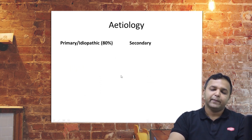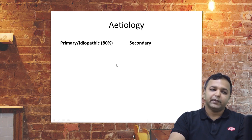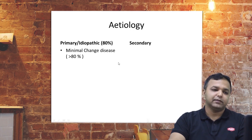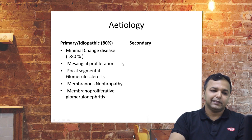Moving on to etiology: childhood nephrotic syndrome is quite different from adult nephrotic syndrome. In children, we generally find primary or idiopathic nephrotic syndrome, which contributes to about 80% of cases, with relatively fewer secondary cases. In primary nephrotic syndrome, minimal change disease is present in more than 80% of cases — which is a good thing for management. Other primary causes include mesangial proliferative glomerulonephritis, focal segmental glomerulosclerosis, membranous nephropathy, and membranoproliferative glomerulonephritis in relatively smaller proportions.